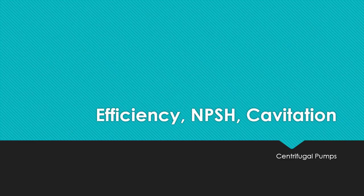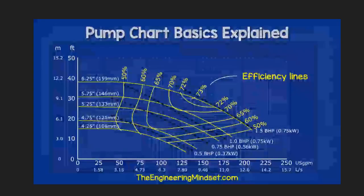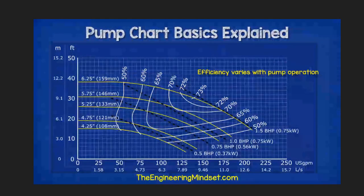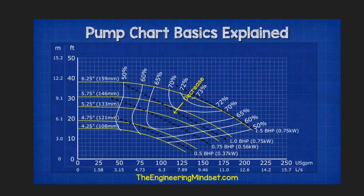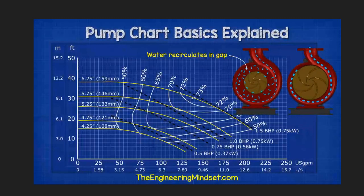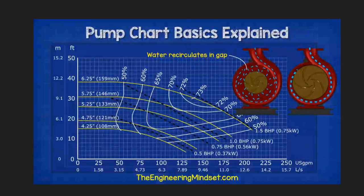We will be discussing efficiency, net positive suction head, cavitation, and centrifugal pumps in these slides. The chart will usually have efficiency displayed in more complex plot lines, where each line displays the percentage of efficiency. In multiple impeller size charts, efficiency decreases as impeller size decreases, because the gap between the impeller and the pump casing increases, allowing water to recirculate in that region and waste energy.